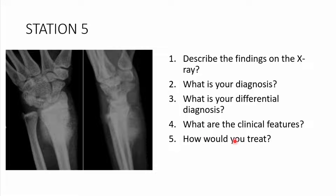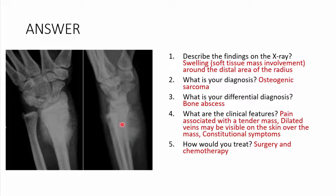You can pause the video and increase the resolution to visualize the image properly. The answer: there is a soft tissue mass or swelling involving the distal area of the radius — this is most likely an osteogenic sarcoma. The differential diagnosis is a bone abscess. Clinical presentation includes pain with a tender mass, dilated veins visible over the skin over the mass, and constitutional symptoms of a tumor. Treatment involves surgery as well as chemotherapy.